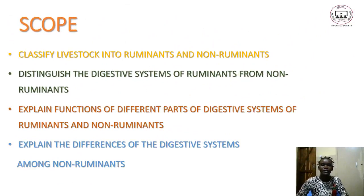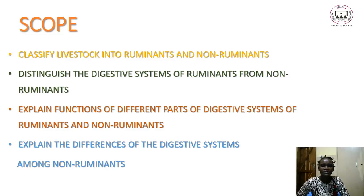Under this topic of classes of livestock we are going to discuss mainly three items. First we are going to classify livestock into ruminants and non-ruminants. We are going to distinguish the digestive systems of ruminants from non-ruminants. Then we are going to explain functions of different parts of digestive systems of ruminants as well as non-ruminants, and lastly explain the differences of digestive systems among non-ruminants.